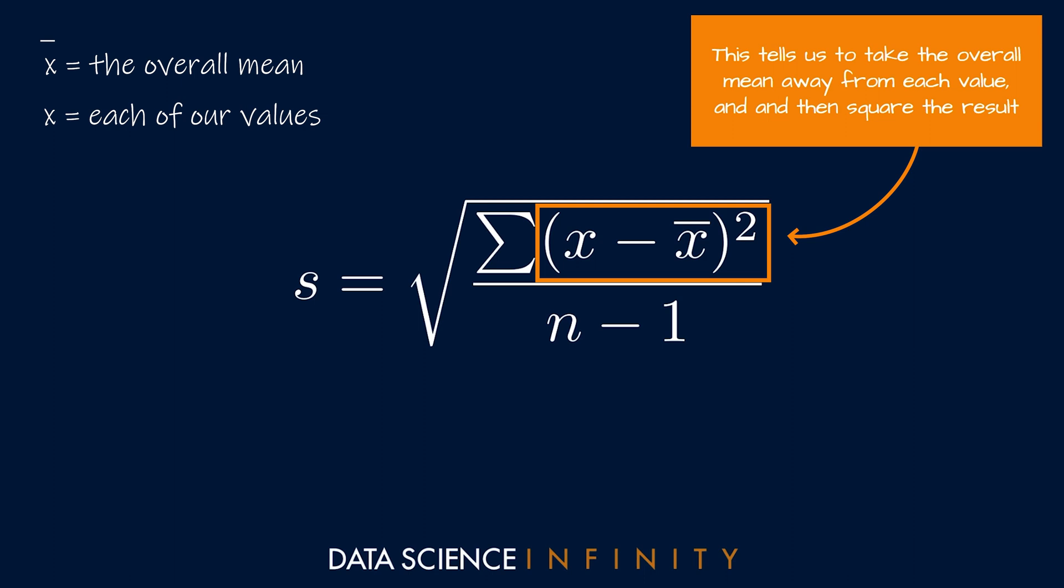In other words, it tells us if each of our values is close or similar to the mean, or if it's quite a distance from the mean. Each time we do take the mean away from one of our values, I mentioned that we square the result. And the reason for this is to ensure that we make all of these differences between the value and the mean positive.